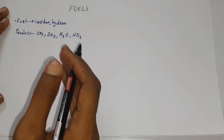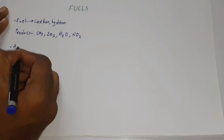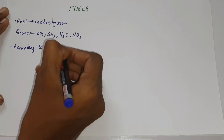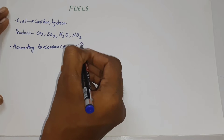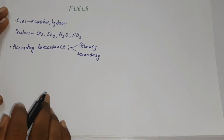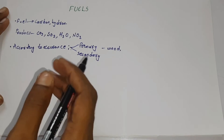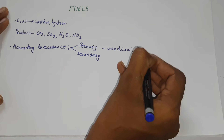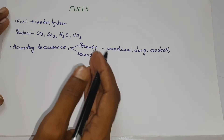In this way the fuel will combust and generate some combustible products. According to occurrence, there are basically two different types of fuels: primary fuel and secondary fuel. The primary fuels are those which naturally occur, and include wood, coal, dung, and crude oil — that is petroleum oil.